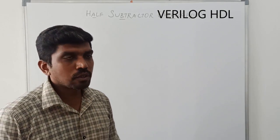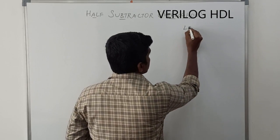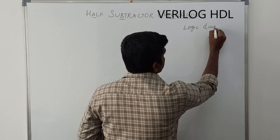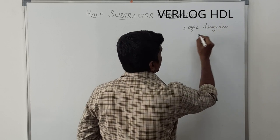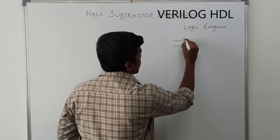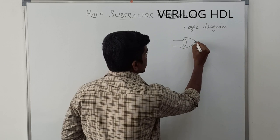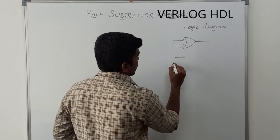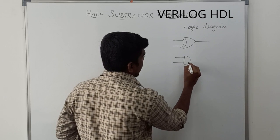Before I start to write the program, first I draw the logical circuit. Logic diagram for half-subtractor. In this logical circuit, it involves two gates.